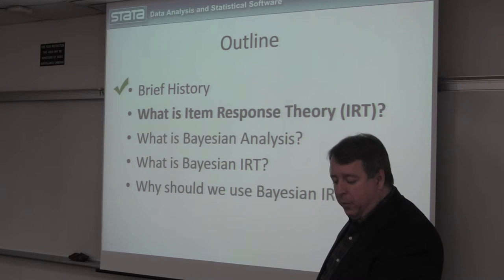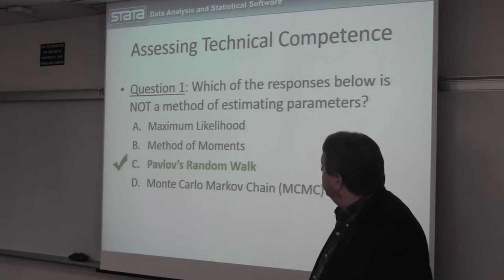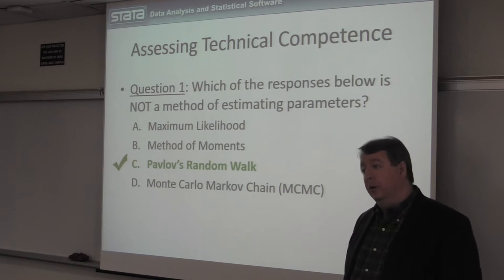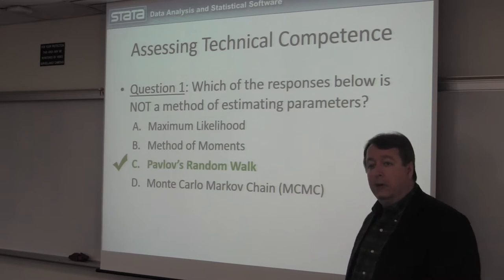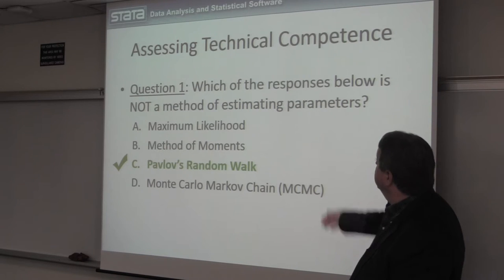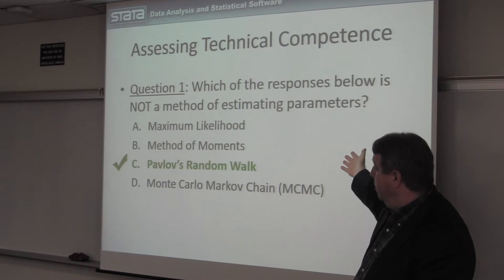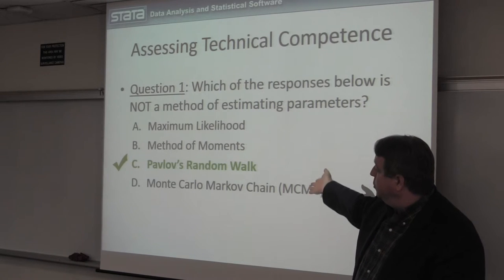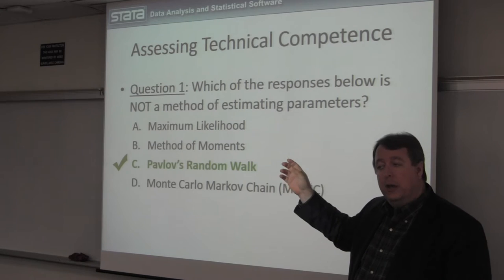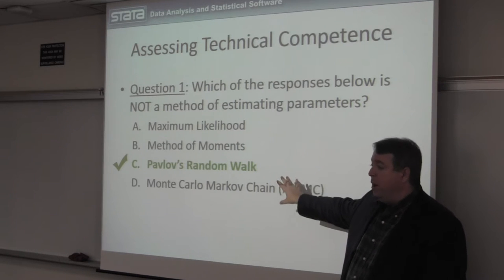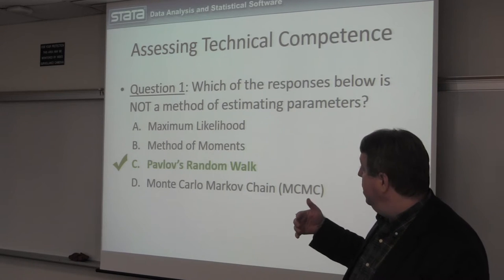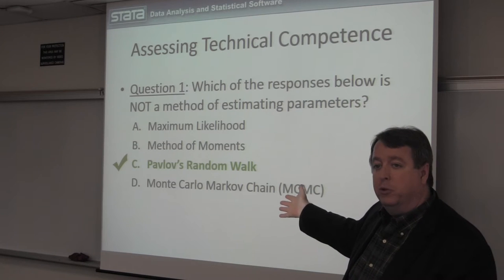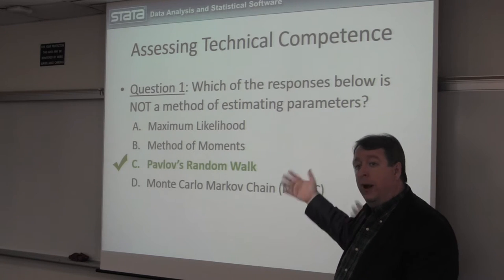So what the heck is IRT — Item Response Theory? Let's imagine that we have a test of some sort, or an instrument as people often call it in the psychometrics world. We have questions on this instrument, or items. The questions could look something like this: which of the responses below is not a method of estimating parameters? There are four possible responses; response C is the correct one. The key point is that even though I have four possible responses, I'm going to treat this as a binary outcome — either correct or incorrect.